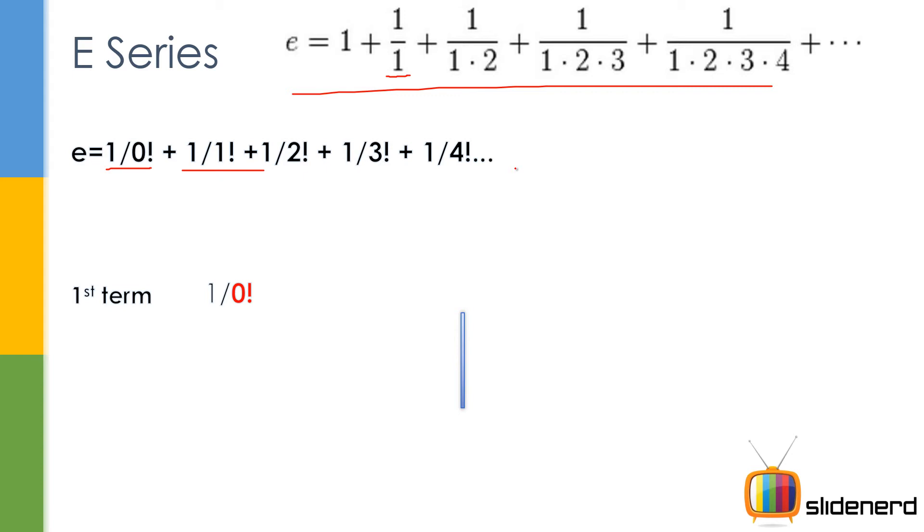If you see, first term is 1/0!, second term, third, fourth, and fifth. So now this problem is merely about finding these factorials, right? 0, 1, 2, 3. If we can find these factorials, then what we do is simply divide 1 by them and we keep